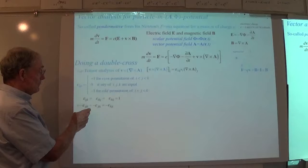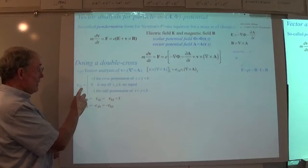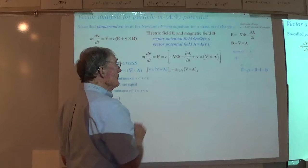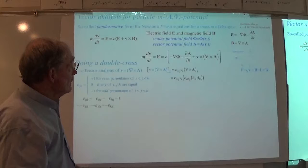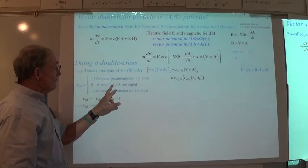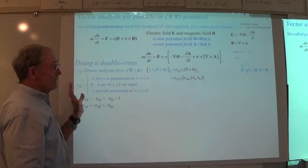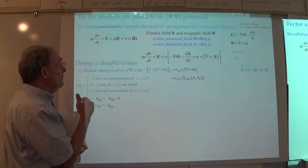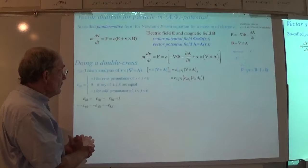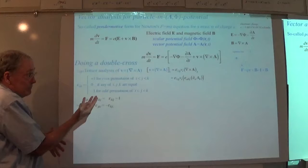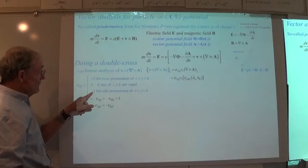I tried to give a course in exterior calculus once and it was a complete flop because it's abstract. But in any case, the idea is that this tensor is what we use to make a cross product. It is completely anti-symmetric — meaning if any two indices are equal, you have nothing. So there are very few non-zero components.